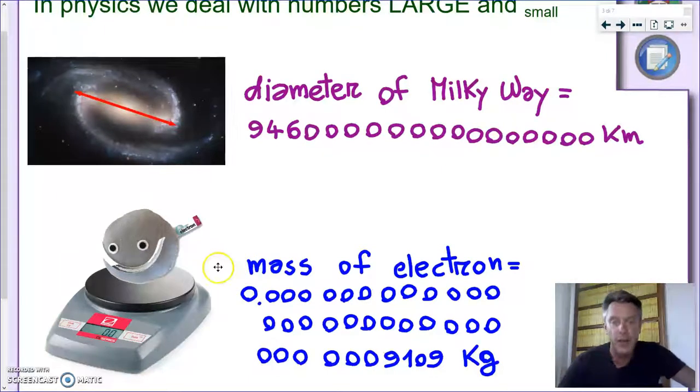well, the mass of the electron is a very, very small number, and if you want to give its value in kilograms, what you will see is zero dot, and then you have a huge amount of zero, you have 30 zeros, and then you have 9109, there's actually more digits here, but I decided to round it up.